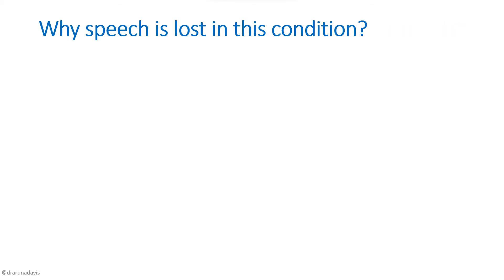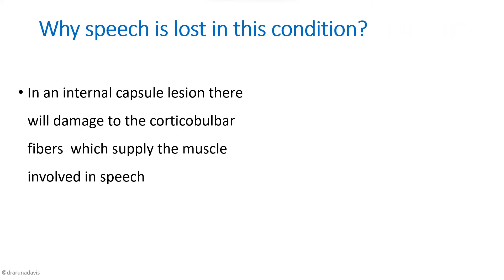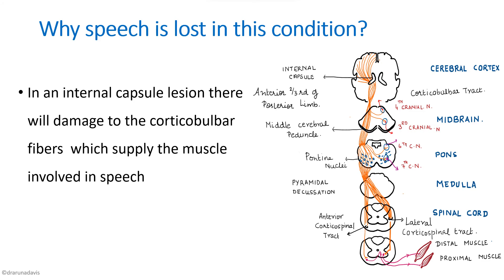Next, why is speech lost in the condition? When the lesion is in the internal capsule, not only are the corticospinal tracts involved but the corticobulbar fibers are also involved. There are fibers supplied to the cranial nuclei — the corticobulbar tract — and because of this involvement, the muscles responsible for speech are affected. So speech is affected in pyramidal tract lesions.